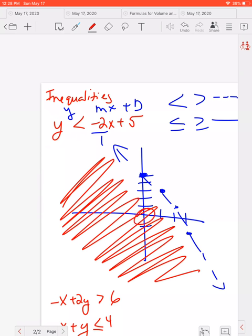You can also test a point. Like if I pick the point 0, 0, we would have 0 is less than negative 2 times 0 is 0 plus 5. 0 is, in fact, less than 5, so we can tell we want to shade that side. So you can always do that. Just pick a point clearly on one side or the other.